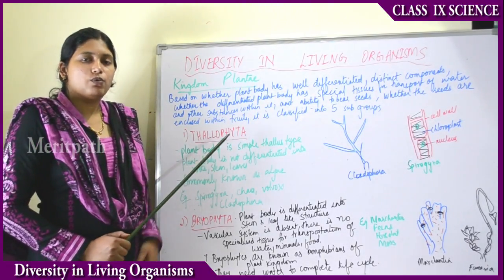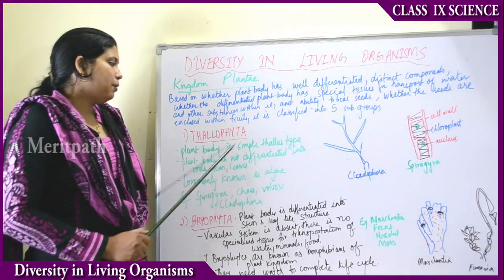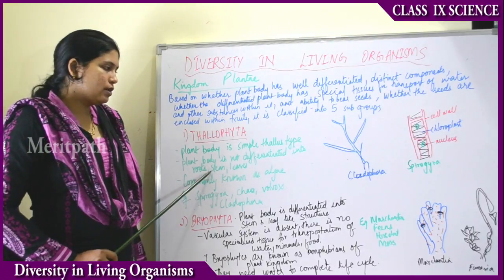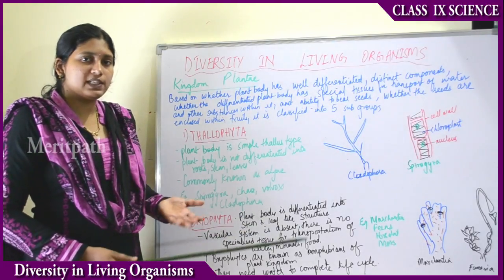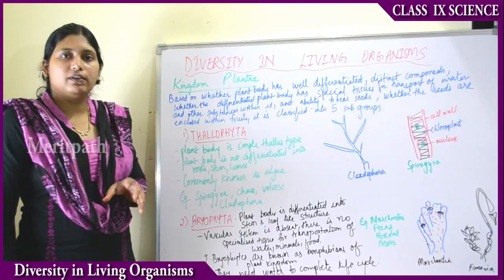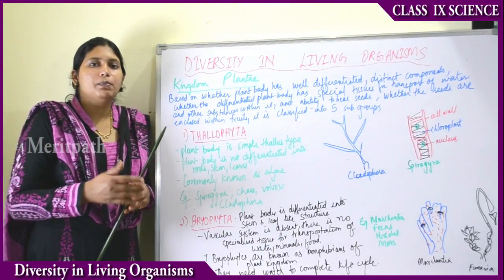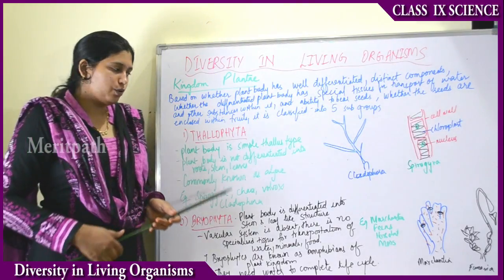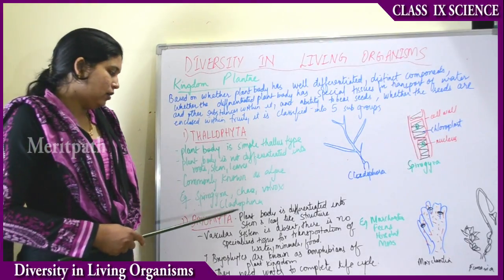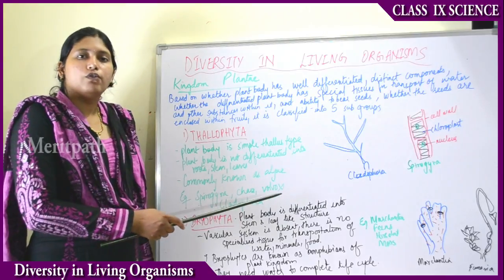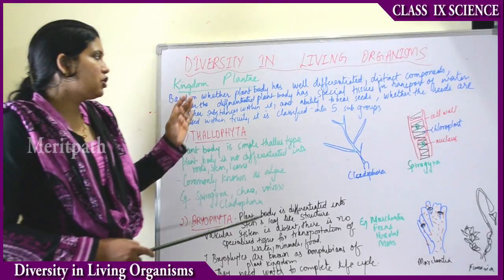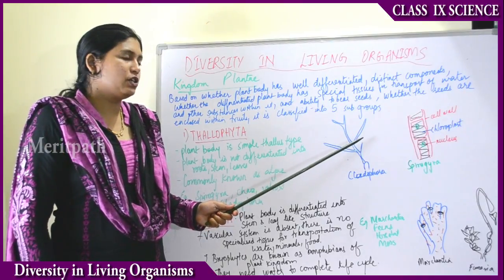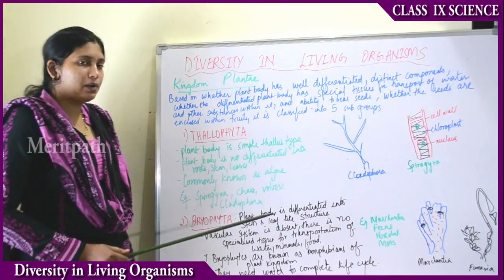The first subgroup is Thallophyta. The plant body is simple, of the thallus type — not well differentiated into roots, stems or leaves. It is a simple plant body with no specialised structures. These are commonly known as algae. Examples include Spirogyra, Chara, Volvox, and Cladophora — these have no specific body differentiation into roots, stems or leaves.